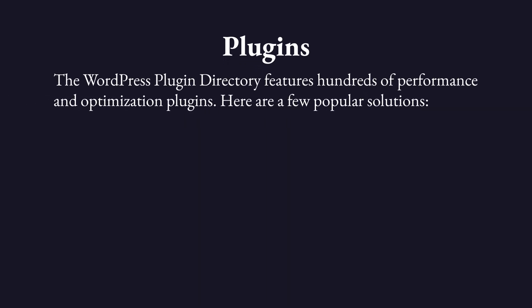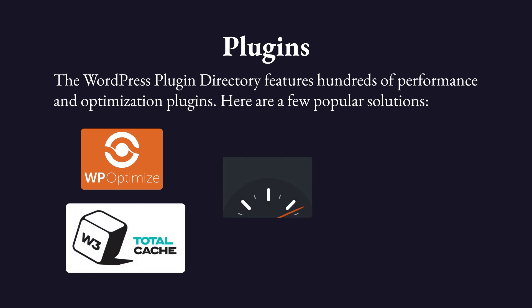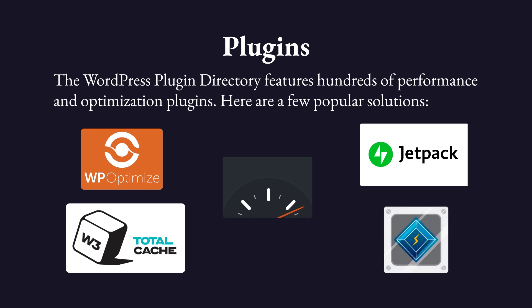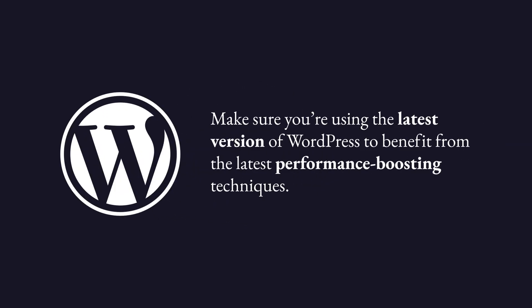The WordPress plugin directory features hundreds of performance and optimization plugins. Here are a few popular solutions: WP Optimize, W3 Total Cache, WP Super Cache, Jetpack Boost, and LiteSpeed Cache. WordPress contributors have been working hard on improving speed and performance. Some features are included in Core, but others require users and developers to enable them. Make sure you're using the latest version of WordPress to benefit from the latest performance-boosting techniques.